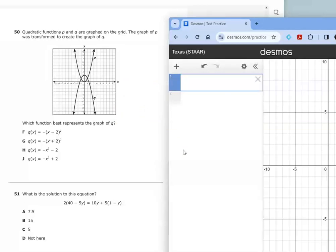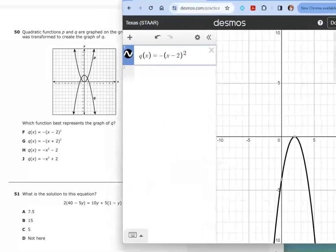So let's start with Q of X equals negative and then X minus 2, shift 6, and then squared. All right. So this answer choice is not going to work because the vertex is here on the x-axis at 2, 0 and we see the vertex is at 0, 2 on the actual test. So let's try answer choice G.